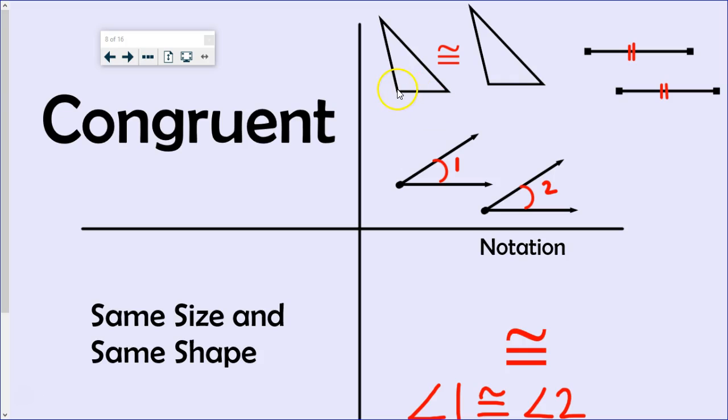In the context of triangles, the length of each side of this triangle must match the length of the sides of this triangle. For the notation, we write an equal sign with a small squiggly mark above it. For example, this notation says that angle one is congruent to angle two.